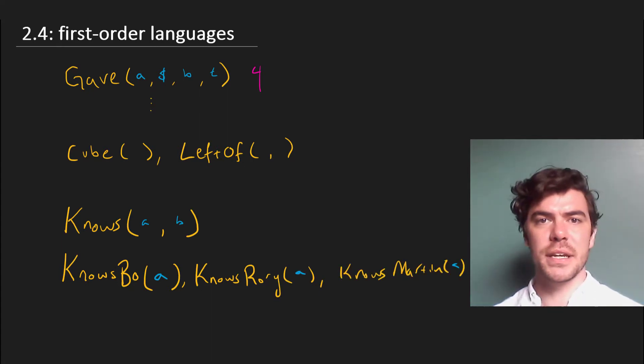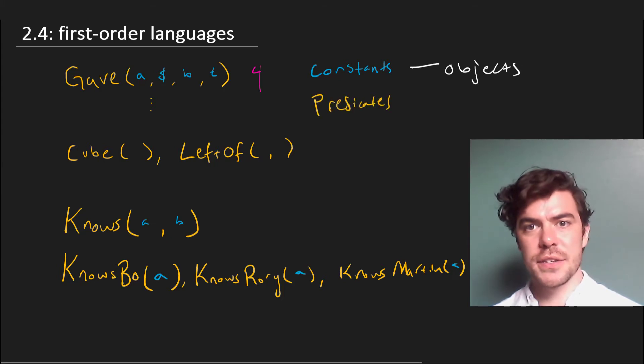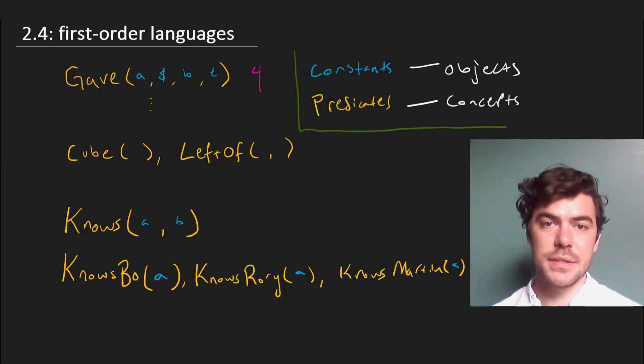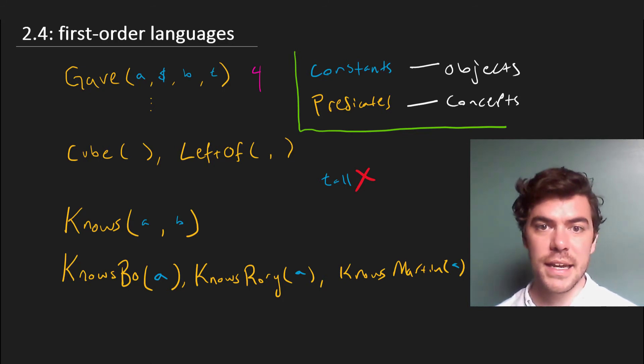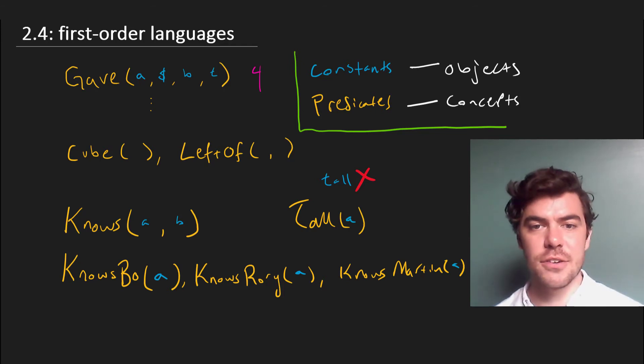Now the general division between constants and predicates is that constants correspond with objects, whereas predicates correspond to concepts, which apply to objects. This is just a general remark, and you don't need to worry too much about it. It's just the reason why, for instance, we can't have a concept picked out by a constant term like tall. There's no such thing as a tall. Tallness, as a concept picked out by a predicate, applies to certain objects picked out by constants, which is why we can say A is tall. But we can't just say there's a tall.